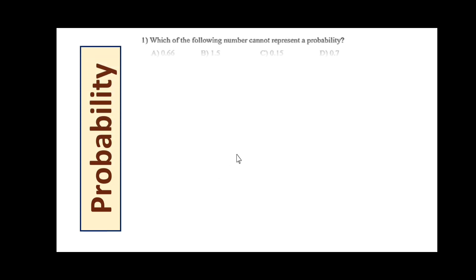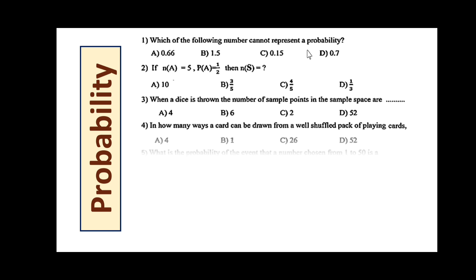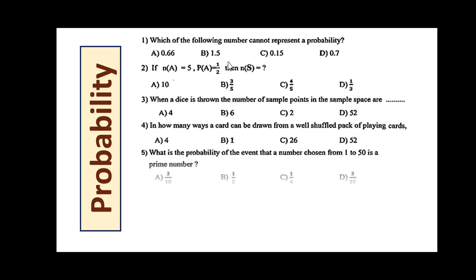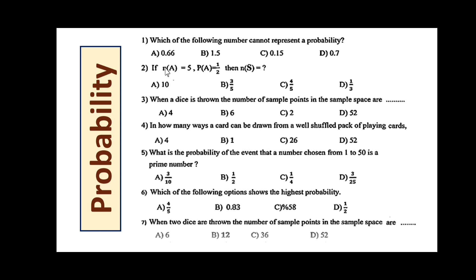We will now discuss the next topic: probability. Which of the following numbers cannot represent a probability? Probability should always be less than or equal to 1. Option B is 1.5, which is more than 1, so it cannot represent a probability. The answer is B.